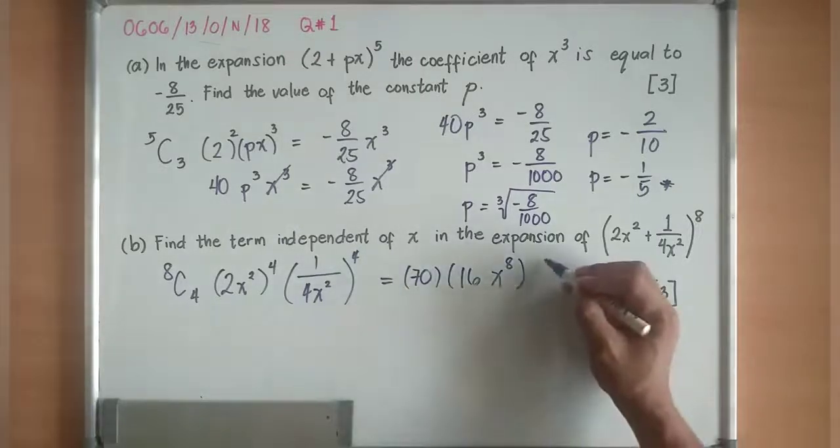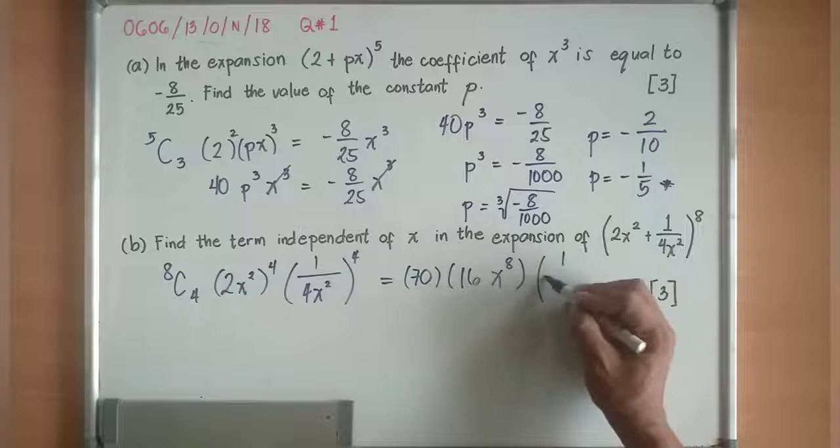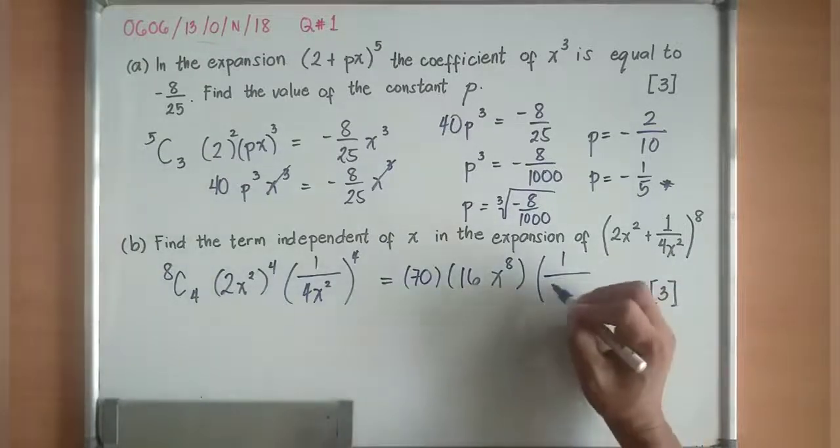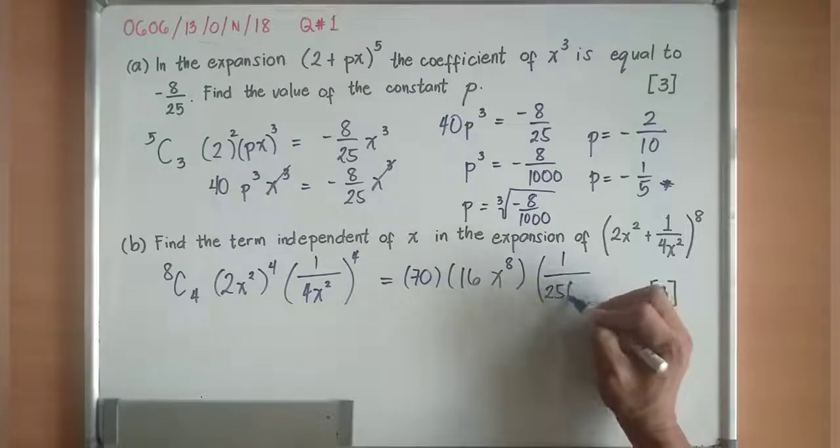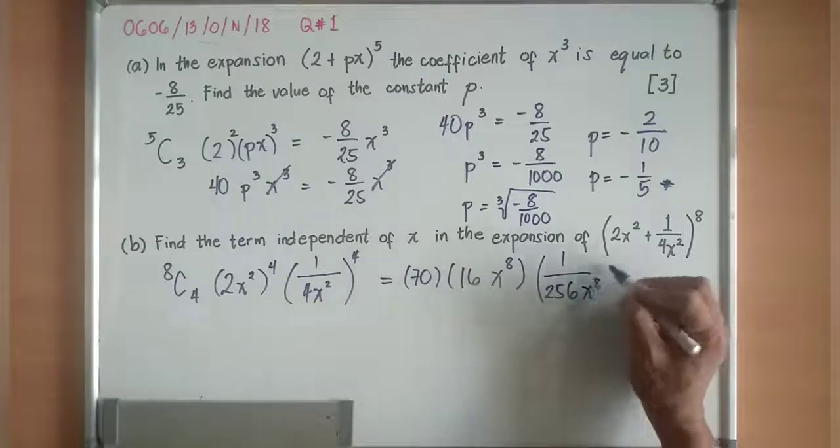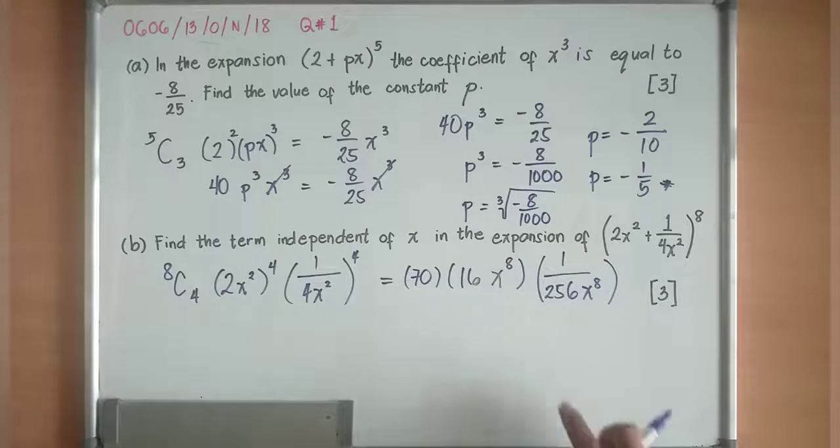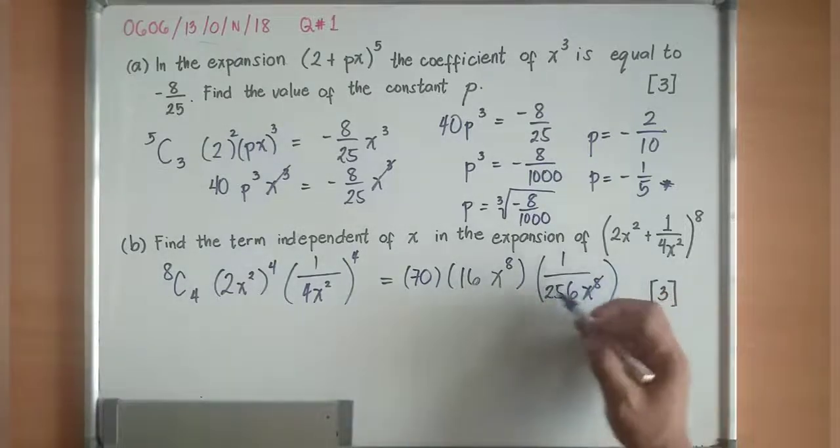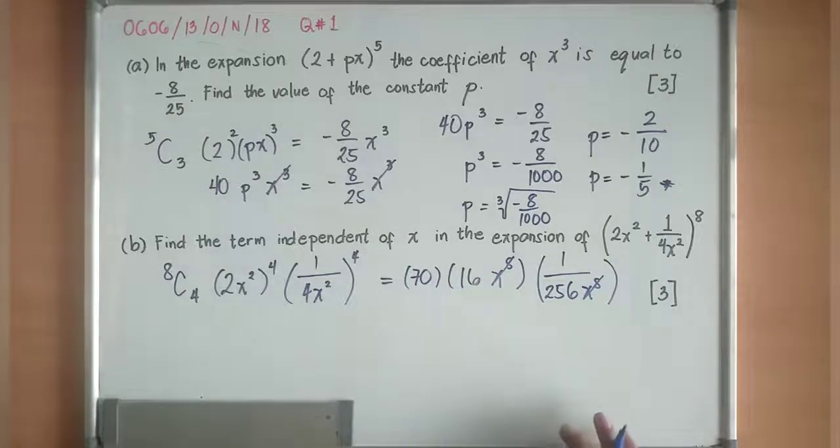Then I have 1/4 to the power of 4 is equivalent to 256x to the power of 8. You see now, x power of 8 divided by x power of 8 will be x to the power of 0, which is equivalent to 1.